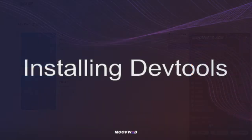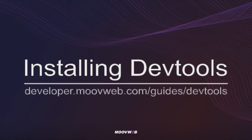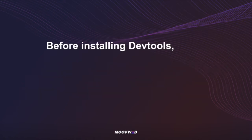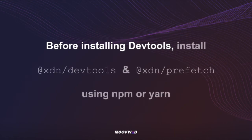To enable DevTools, first we'll need to install it. Instructions on how to install DevTools can be found on our documentation at developer.moveweb.com/guides/devtools, but I'll go over it briefly here. Before you install DevTools, you'll first need to make sure that the node packages XDN/devtools and XDN/prefetch are installed in your project. You can use regular install commands with npm or yarn to install these packages.